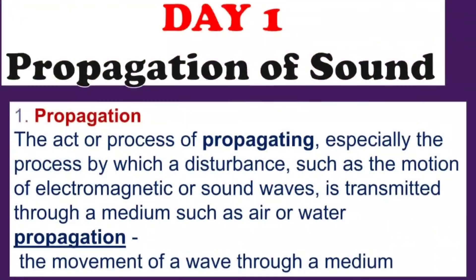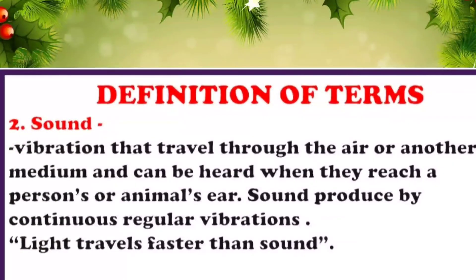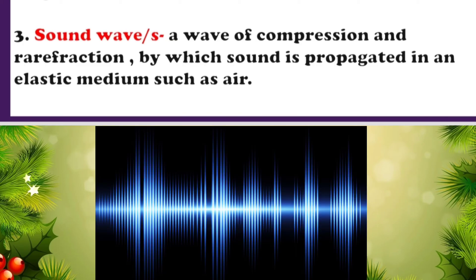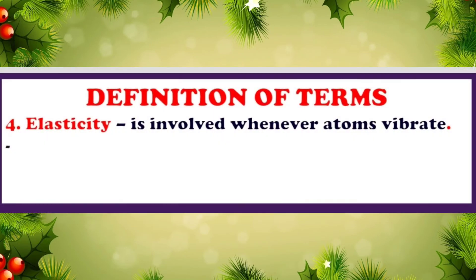To unlock difficulties, let me share definitions of key terms. Propagation is the act or process of propagating, especially the process by which a disturbance such as the motion of electromagnetic or sound waves is transmitted through a medium such as air or water. Sound is a vibration that travels through the air or another medium and can be heard when it reaches a person's or animal's ear. A sound wave is a wave of compression and rarefraction by which sound is propagated in an elastic medium such as air.